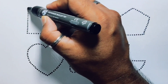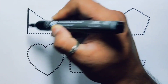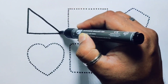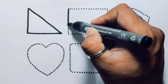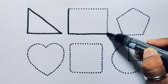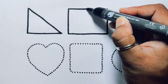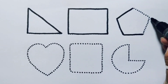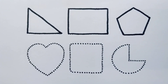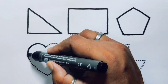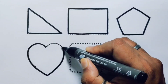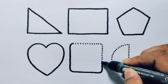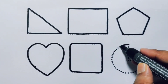First we're going to draw the shapes: rectangle, rectangle, pentagon, heart, square, and pink.